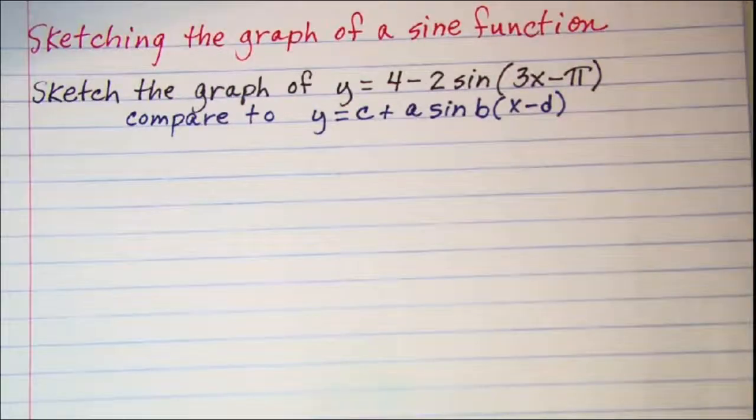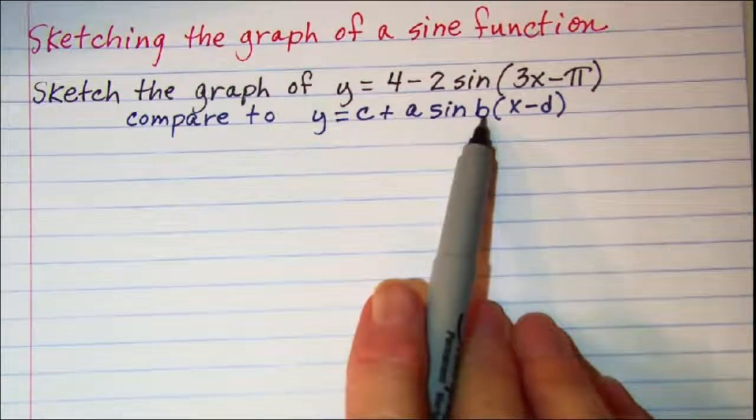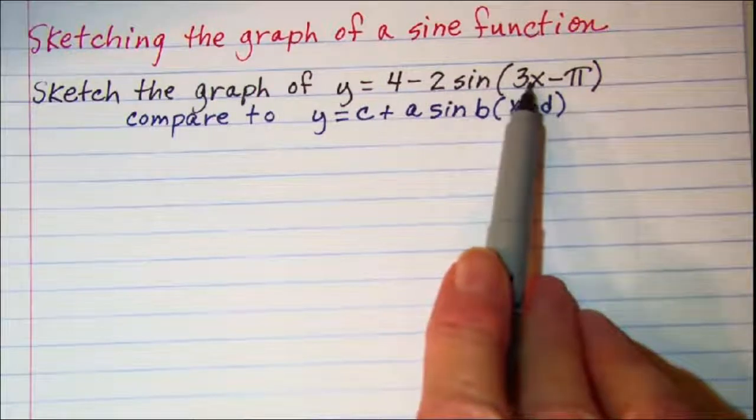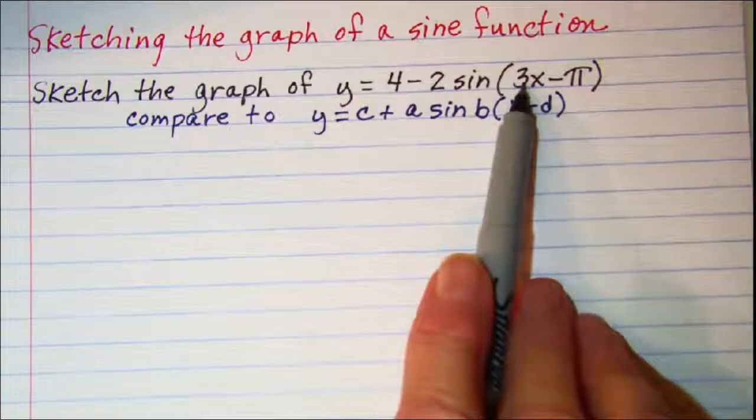Our first step is to factor B so that the equation is in this format. Notice that this x value has a 3 coefficient. This 3 needs to be factored out.